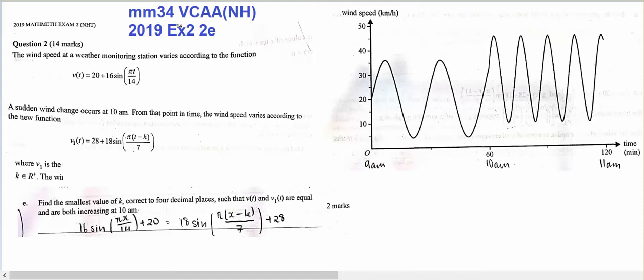So we have this wind speed question where the wind speed was this, which is the first graph up until here at time 60, and it joins into this where it's got a large amplitude and also a larger median. It's got a different period, this is over 7, and it has some sort of translation.